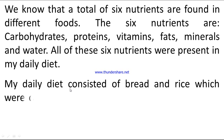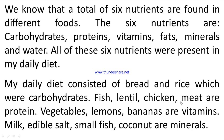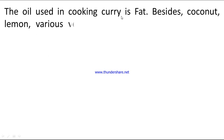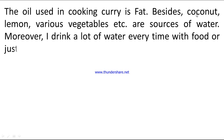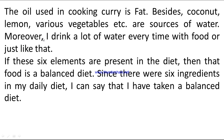Have you eaten a balanced diet? My daily diet consisted of bread and rice which are carbohydrates; fish, lentil, chicken, and meat which are proteins; vegetables, lemons, and bananas which are vitamins; milk, edible salt, small fish, and coconut which are minerals; and the oil used in cooking is fat. Besides, coconut, lemon, and various vegetables are sources of water, and I drink a lot of water. Since all six elements were present, I can say I have taken a balanced diet.